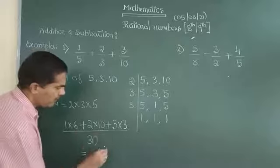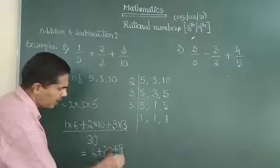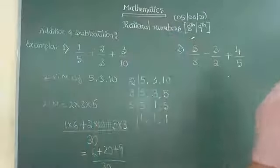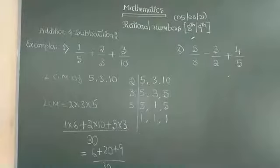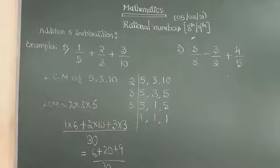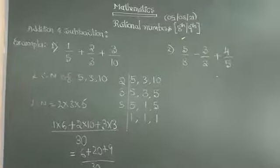6 plus 20 is 20. Plus 30 is 9, by 30. Of course, further adding you do. You have got 6 plus 20 plus 9. You have got 29 plus 6, 35 by 30. 35 by 30 can be simplified also. You can write it as a lowest fraction. That can be done. That work is for your further homework.